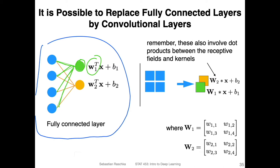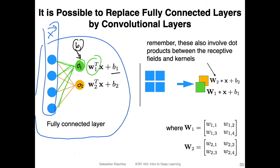We multiply the weight vector with the inputs here, the input x. And then we also have some bias unit — the bias unit is not shown, but it's added here. And yeah, this is how we compute the first output, let's call that output one. And then we have output two, computed the same way, except now we have these yellow connections, which is our w two.